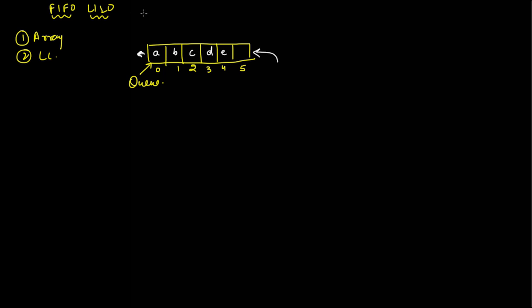We are going to use two variables. The first variable will be called head — or since we have used head in linked list, we can use a different name like 'top of q' (toq). The second variable will be called tail. Head is going to point to the initial front data of the queue and tail is going to point to the last data of the queue.